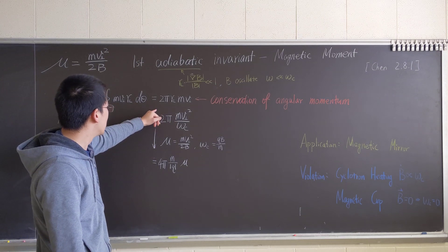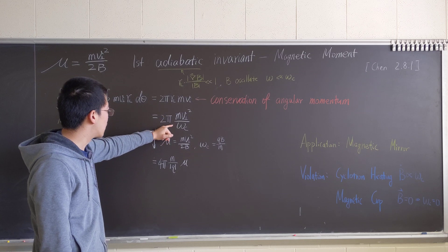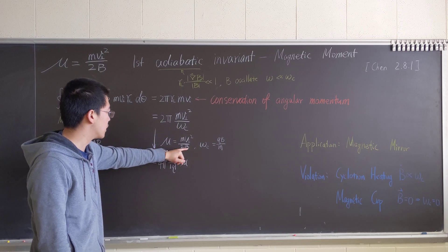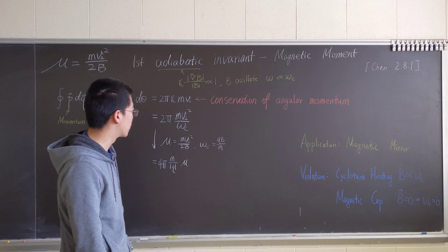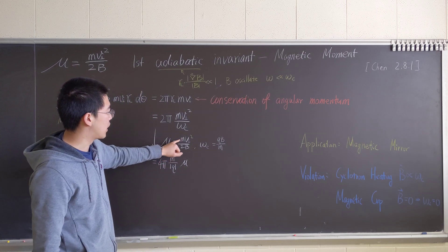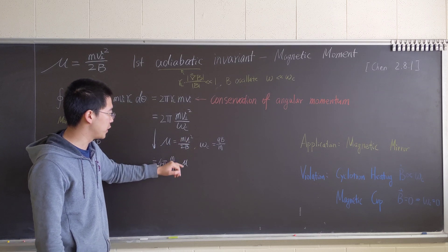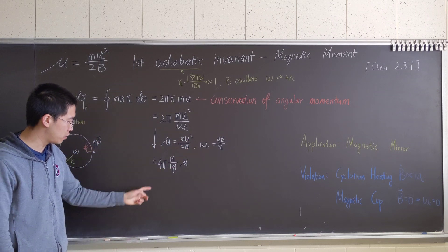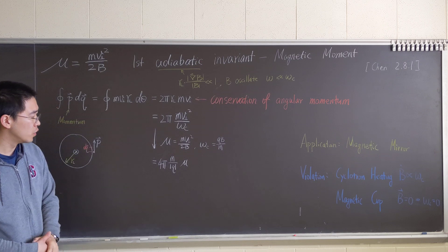Now I'm going to do this and try to convert it to another way, based on ωc equals qB over m. And we get this expression. I'm plugging in μ equals mv perp squared over 2B. We end up having this: 4πm over q times μ.